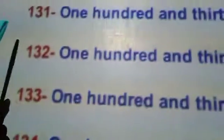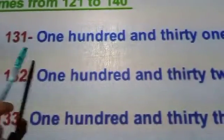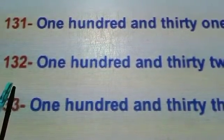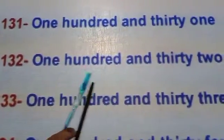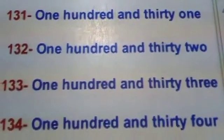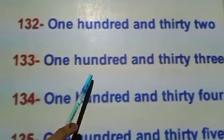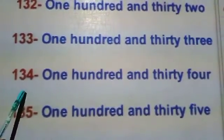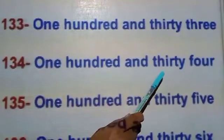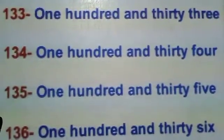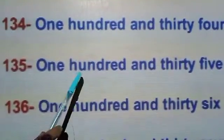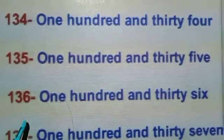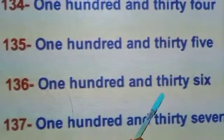Now next. One three one — one hundred and thirty-one. One three two — one hundred and thirty-two. One three three — one hundred and thirty-three. One three four — one hundred and thirty-four. One three five — one hundred and thirty-five. One three six — one hundred and thirty-six.